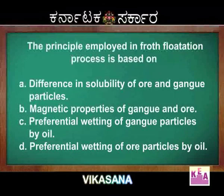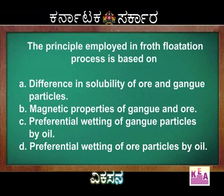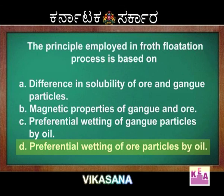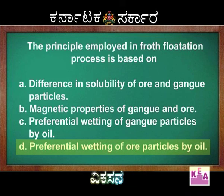Reading the options: difference in solubility of ore and gangue particles; magnetic properties; preferential wetting of gangue by oil; preferential wetting of ore by oil. The right option is Option D — wetting of ore by oil is correct, and at the same time, wetting of the gangue by water is also correct. Option D matches.